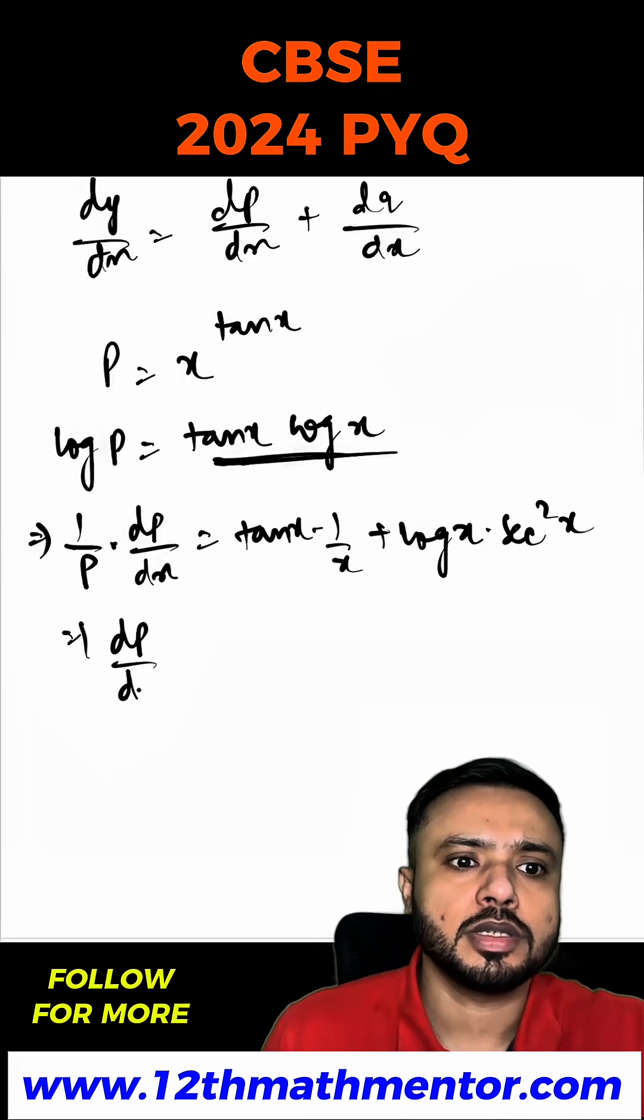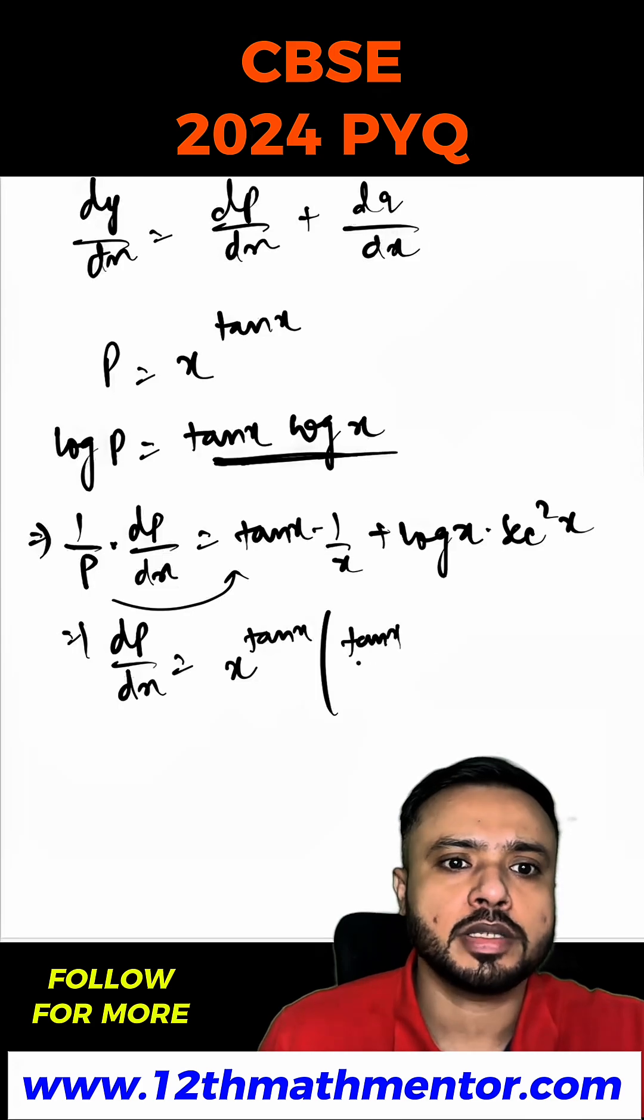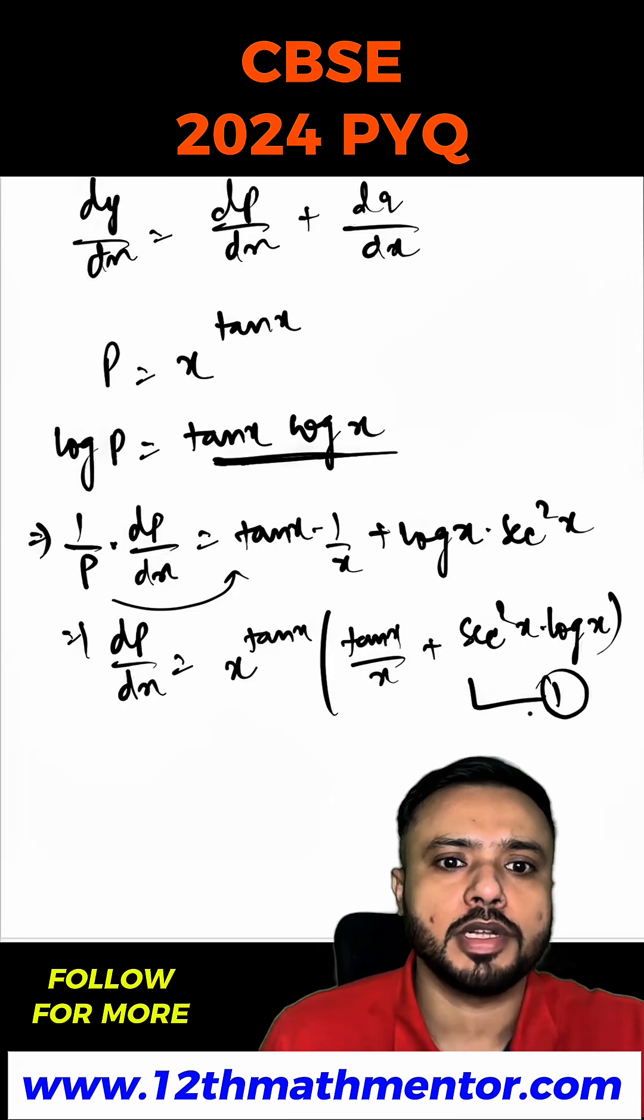So I will get dp/dx equals - p will come to this side and we will substitute the value of p. So x raised to the power tan x into (tan x/x plus sec²x · log x). This is my dp/dx. I will label this as equation 1.